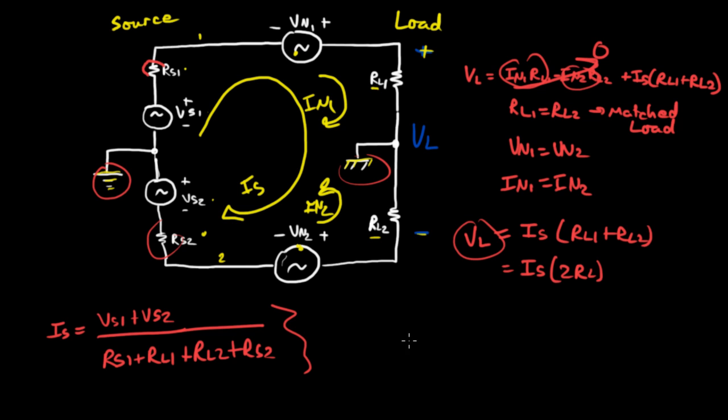If we want the load voltage to accurately reflect this VS1 plus VS2 term, we need RS1 to be roughly equal to RS2. And practically speaking, we want them to be as low impedance as possible, in fact, 0 ohms. You want the output impedance of the source to be 0 ohms, and in that case, IS would equal VS1 plus VS2 divided by 2 times the load resistance, because remember, we match the load from over here.